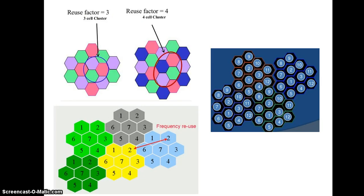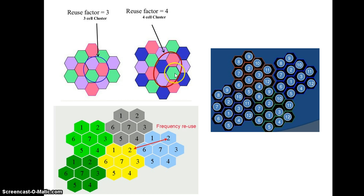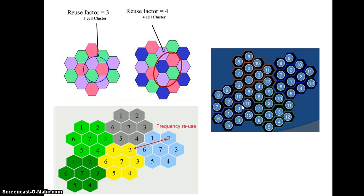For visualization: a reuse factor of 3 means the entire frequency set is divided into three cells and repeated. A four-cell cluster shows four different colors that repeat. The seven-cell cluster is what we used in all the examples in this video. A twelve-cell cluster divides all frequencies into twelve different cells and then repeats. These are the different structures for particular cluster sizes.